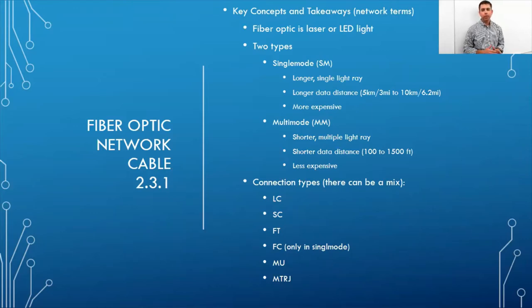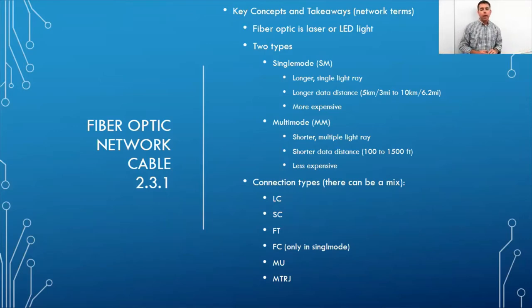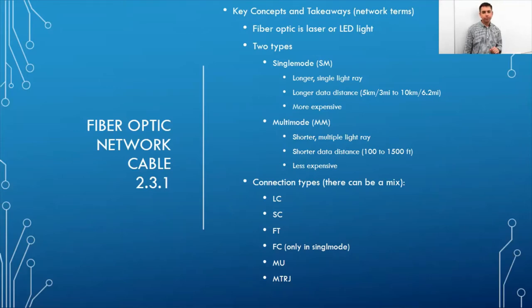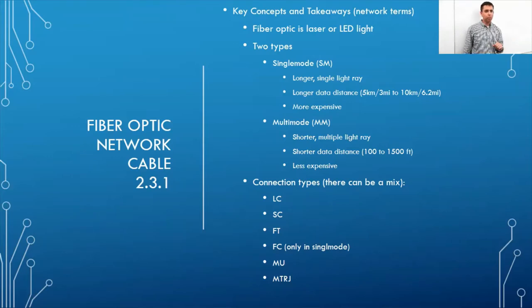There are two types of fiber optic cable: single mode and multi-mode. Single mode uses a single light ray that reflects only a few times inside the glass tube and can travel longer distances. Multi-mode reflects many light signals and is limited to shorter distances, but is less expensive and can sometimes transmit more data.